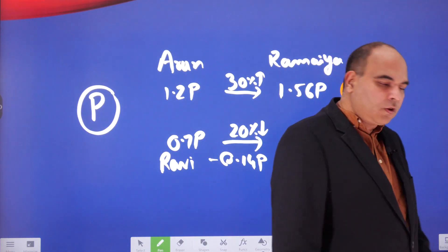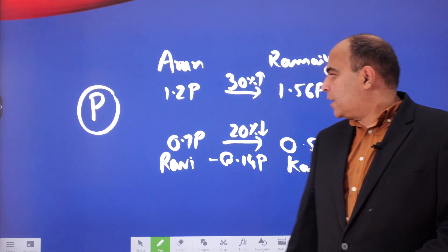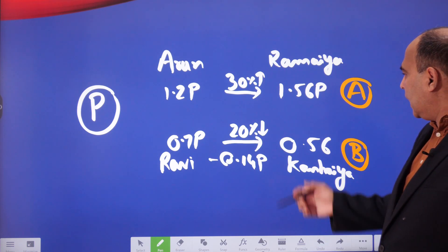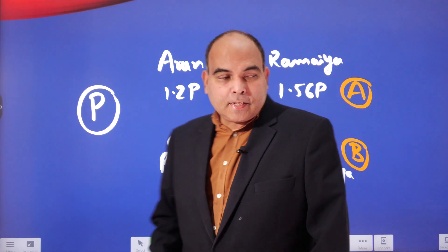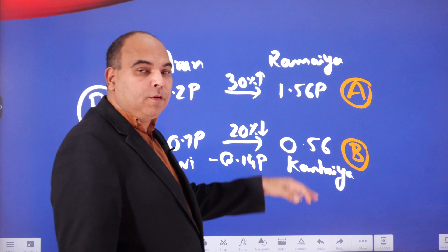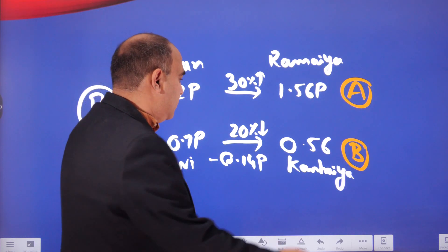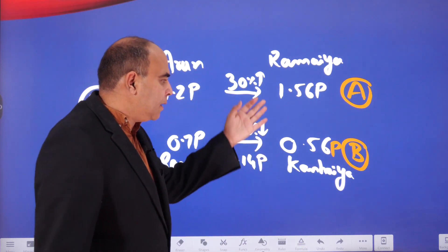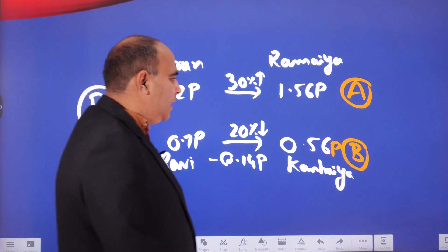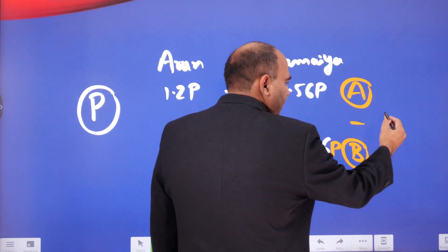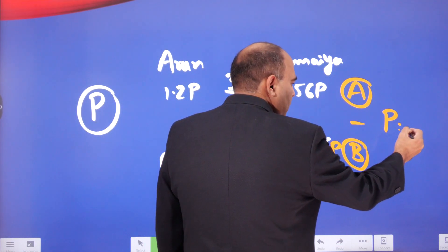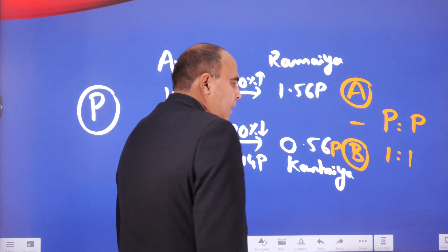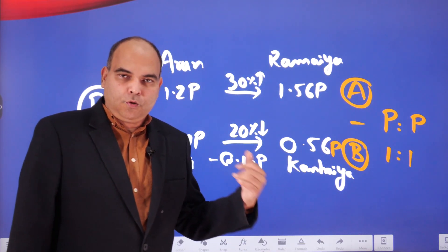When they ask for the ratio of (A minus B) to P, we can see clearly that A minus B is 1.56P minus 0.56P, which equals P. So P to P gives a ratio of 1 is to 1, and that is the answer to this question.